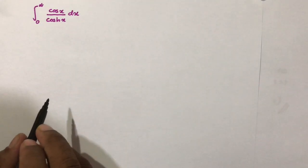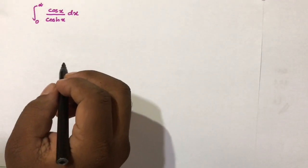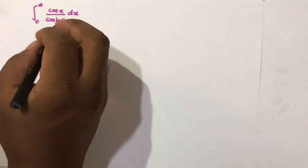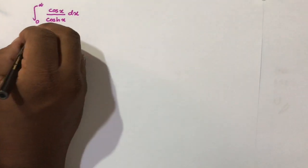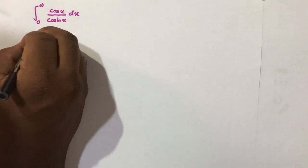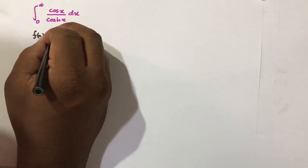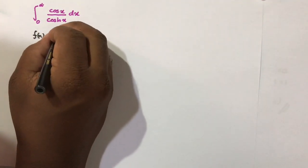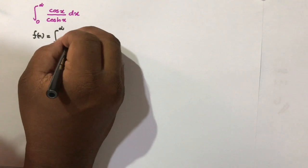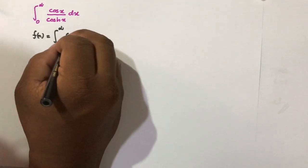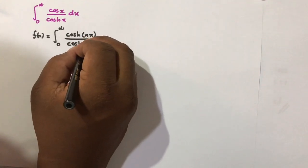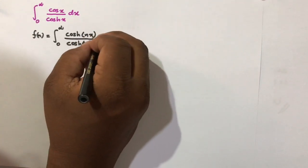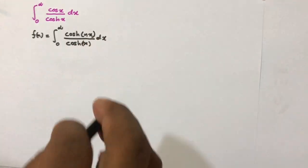Welcome to the Mathematics of My Channel. In this video we are going to solve another interesting and advanced integral within hyperbolic functions. First of all, I am going to define a function: f(n) is equal to the integral from 0 to infinity of hyperbolic cosine of nx over hyperbolic cosine of x dx.